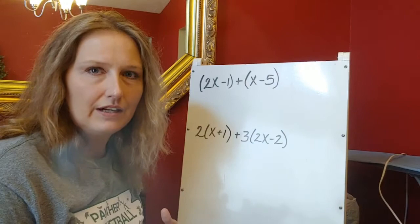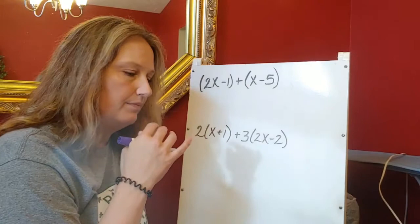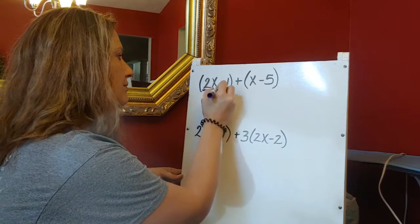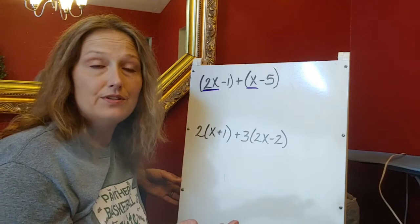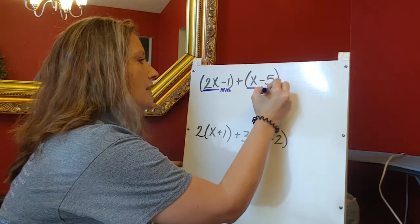I can only add those together. So let's identify what our like terms are in this first question right here. I have a 2x and an x. I know those are like terms.